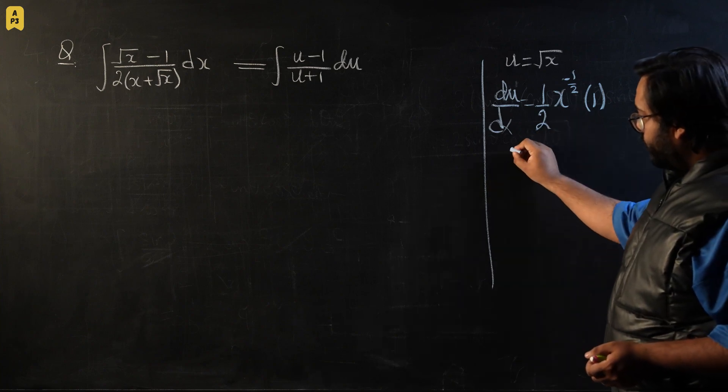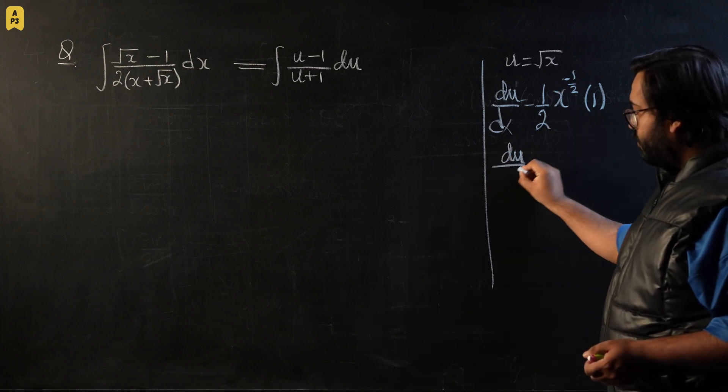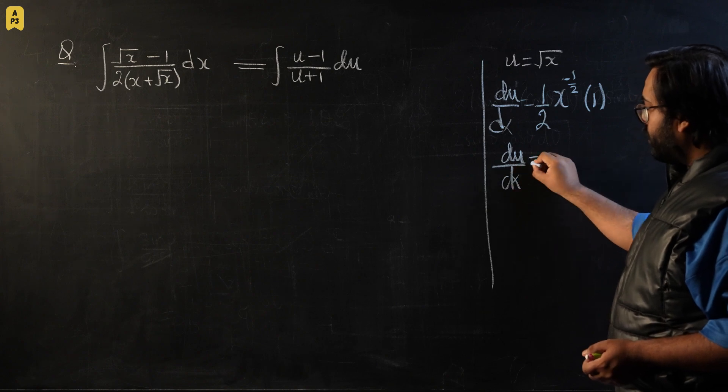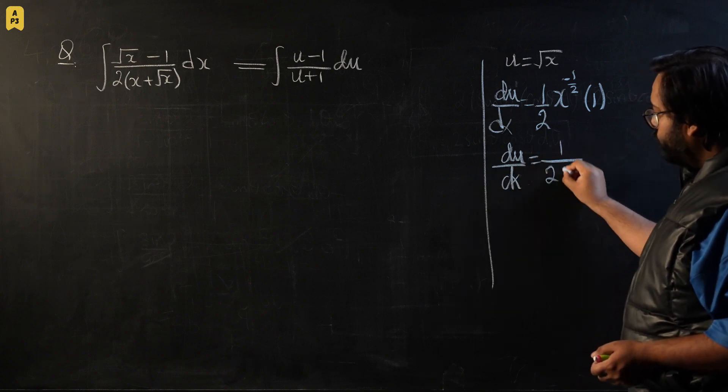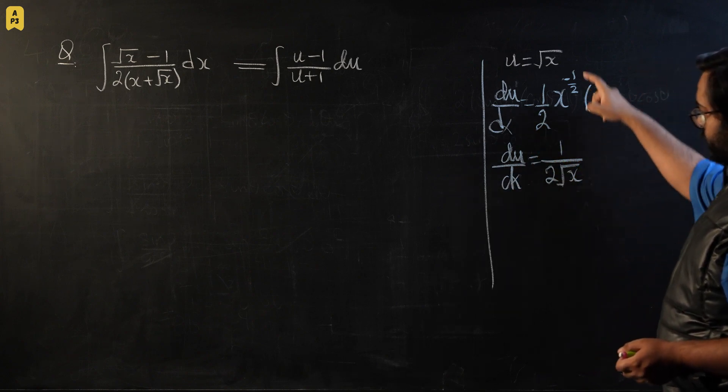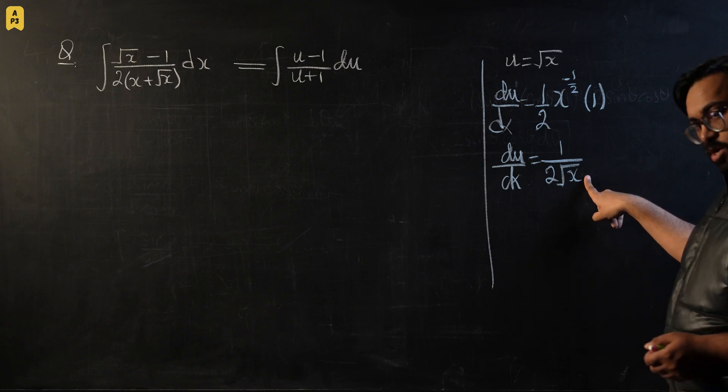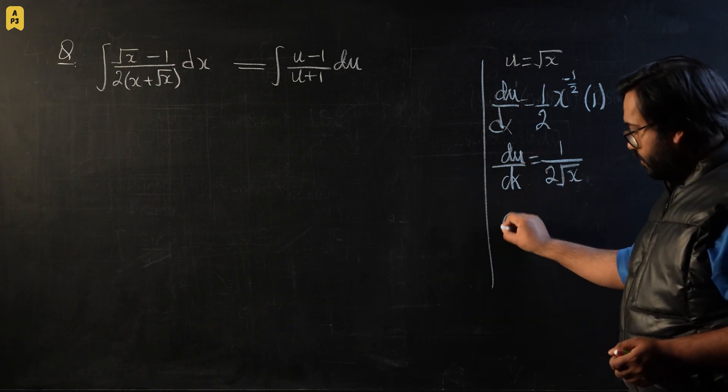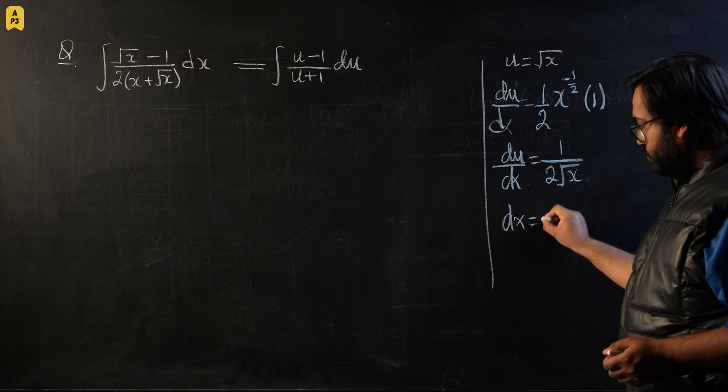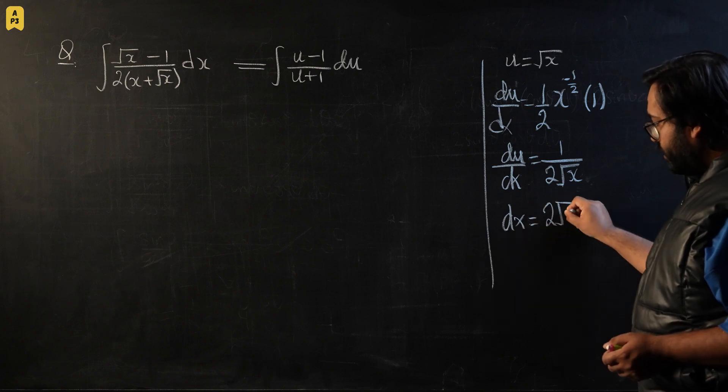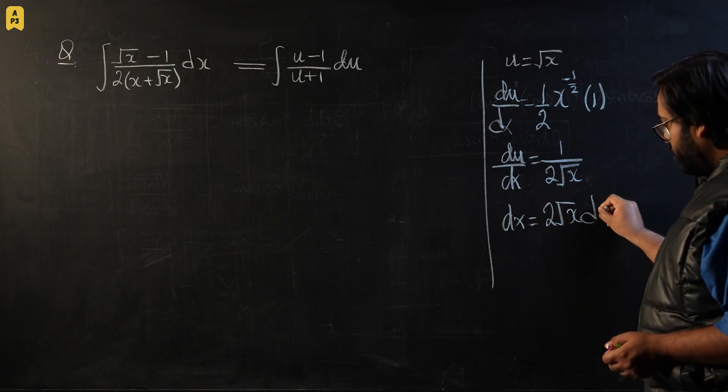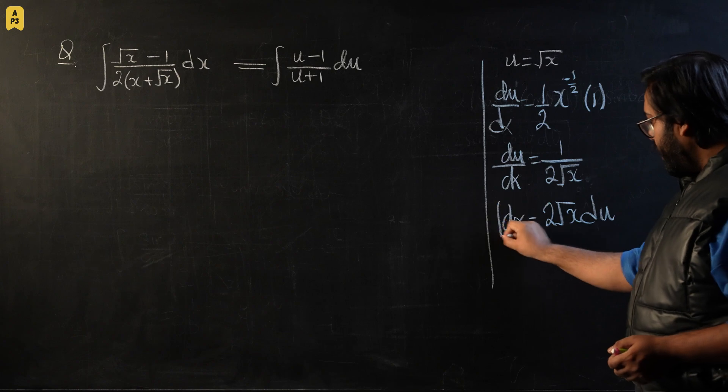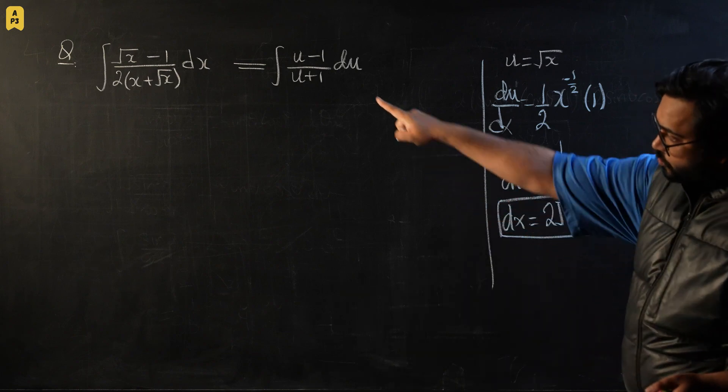Now we're going to simplify this a little bit, make dx the subject. So this is 1 over 2 square root of x. The power is negative goes into the denominator becomes positive. Now you cross multiply and you get dx equals 2 square root x du and this is what we're going to use over there.